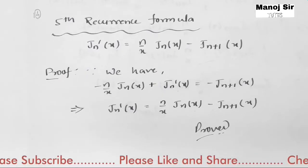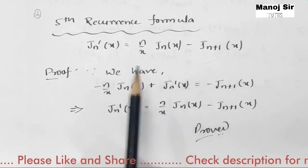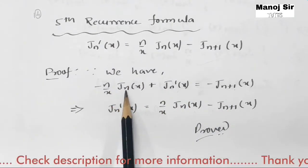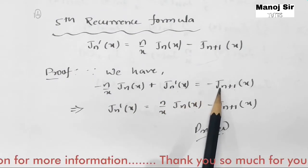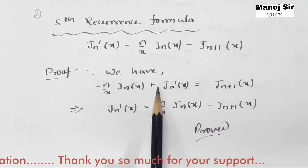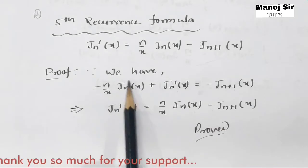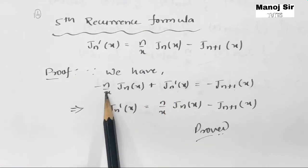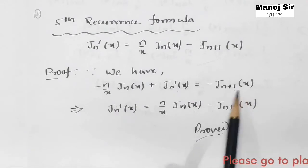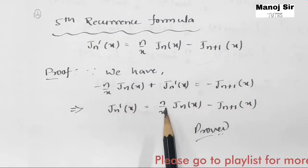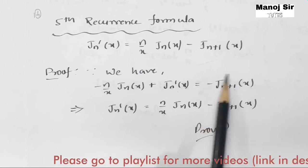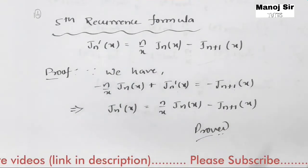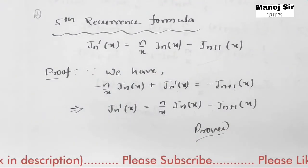Here we have the fifth recurrence formula that we need to prove. Since we have: minus n upon x times jn(x) plus jn'(x) equals minus jn+1(x), we take the n/x term to the right-hand side. Because it is negative on the left, it becomes positive on the right: jn'(x) equals n upon x times jn(x) minus jn+1(x). This is the fifth recurrence formula — hence proved.